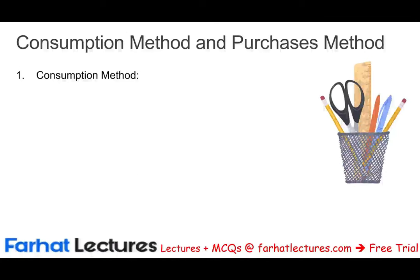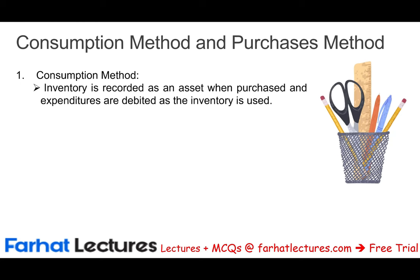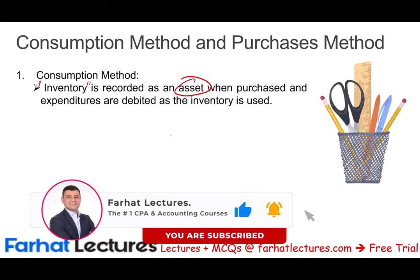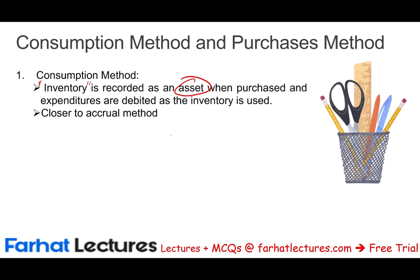Let's explain the difference between the consumption method and the purchase method. Under the consumption method, inventory — and when I say inventory, remember it's supplies and material — is recorded as an asset when you buy those supplies and material, then you expense them as they are consumed. That's why it's called the consumption method: inventory is recorded as an asset when purchased, and expenditures are debited as the inventory is used.